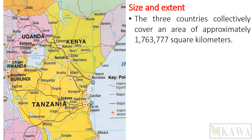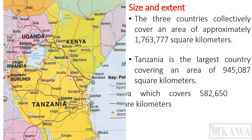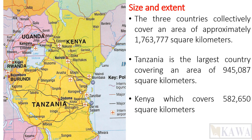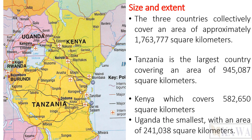When dealing with East Africa, we are basically focusing on three countries — meaning we are leaving out Rwanda, Burundi, and South Sudan. The reason being that historically, Uganda, Kenya, and Tanzania were the former British colonies, and so the syllabus for East Africa only included these three countries. These countries are located in the Eastern region of Africa.